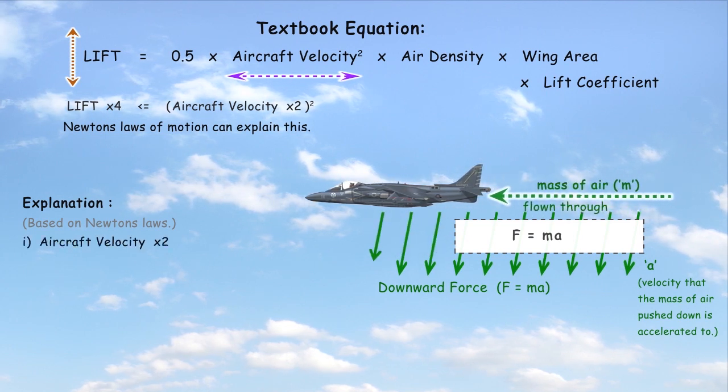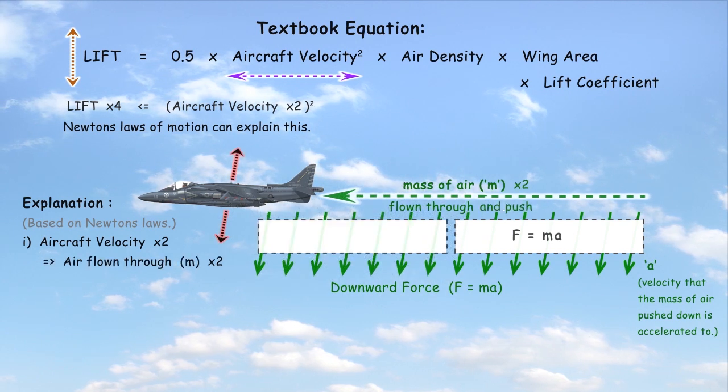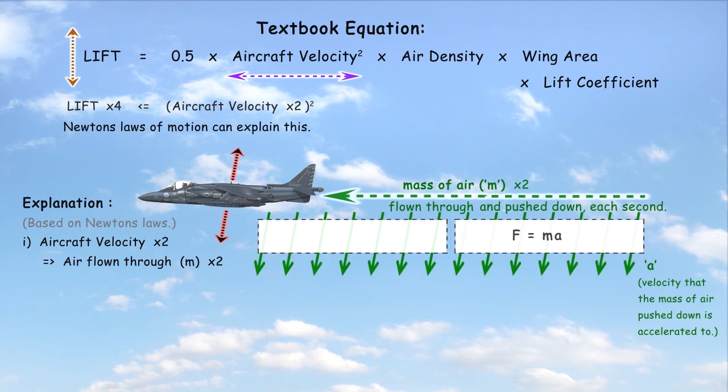Firstly, when the airplane's horizontal airspeed doubles, then it will travel twice the distance each second, and therefore this will double the downward force.